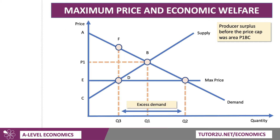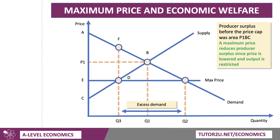What about producers? Producer surplus before the price cap was area P1, B, C — the area above the supply curve and below the price. A maximum price, however, reduces producer surplus since price is lowered, and as we've seen, output is restricted from Q1 to Q3. So the new producer surplus is area E, D, C — and that is definitely lower than it was before. That's quite an important point: price caps do have a negative effect on the revenues and profits of producers.